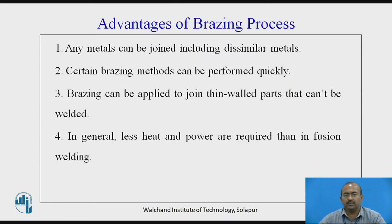Advantages of brazing: any metals can be joined, including dissimilar metals — this is the most important advantage compared to welding. Certain brazing methods can be performed quickly. Brazing can be applied to join thin-walled parts that cannot be welded at all. In general, less heat and power are required than in fusion welding.